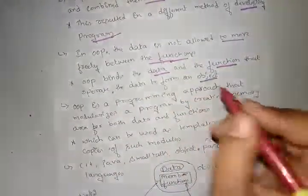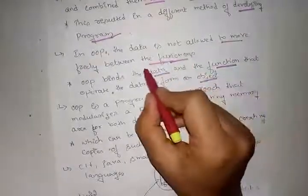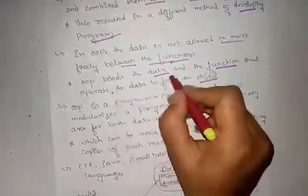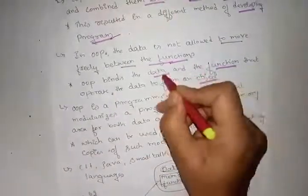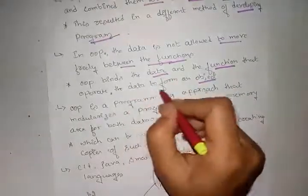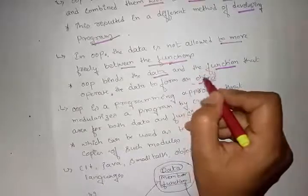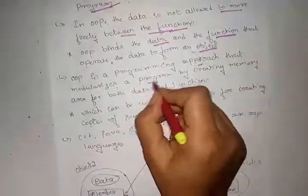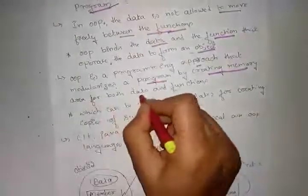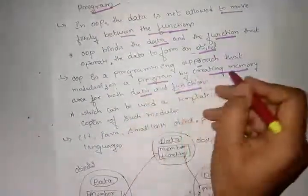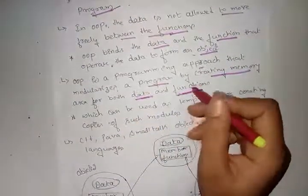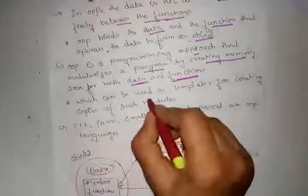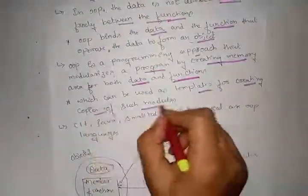OOP binds the data and functions that operate on the data to form an object. Data and functions are combined in the object, and access to data goes through the functions. OOP is a programming approach that creates memory area for both data and functions, which can be used as templates for creating copies of such modules.